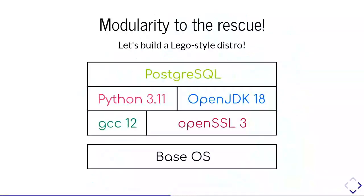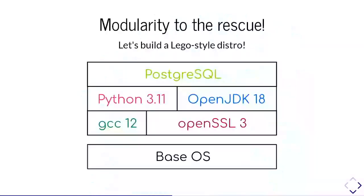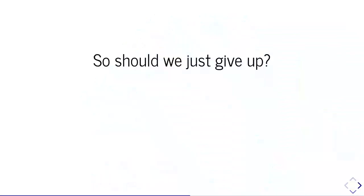The whole idea works very nicely if all these modules are isolated and have small interfaces — but that's not the case. As soon as you add a module you have to test it against all other modules. If you have three Python versions, three OpenJDK versions, two OpenSSL versions, you can start calculating how many combinations you have to test — and you can't test that in practice. So this doesn't work.